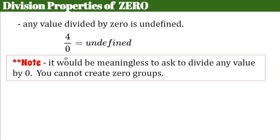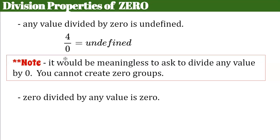Now let's talk about zero divided by any value — that will always be zero. If I have nothing, I can make zero groups; that makes sense. It might seem odd to ask you to take nothing divided by six, but you can say: I have nothing, so it's going to be zero.